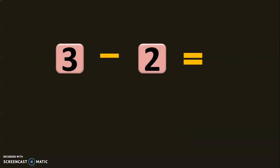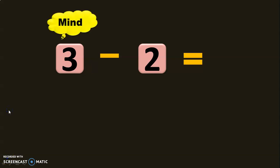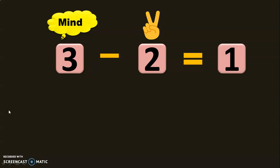The first sum we are going to see is 3 minus 2. How do you do this subtraction? 3 in the mind and 2 in the fingers. For subtraction, you do the before numbers — before 3: 2, 1. The answer, or the difference, for 3 minus 2 is 1.